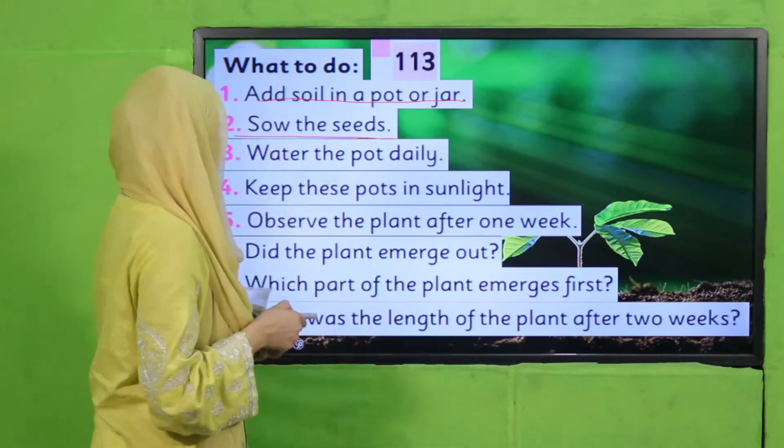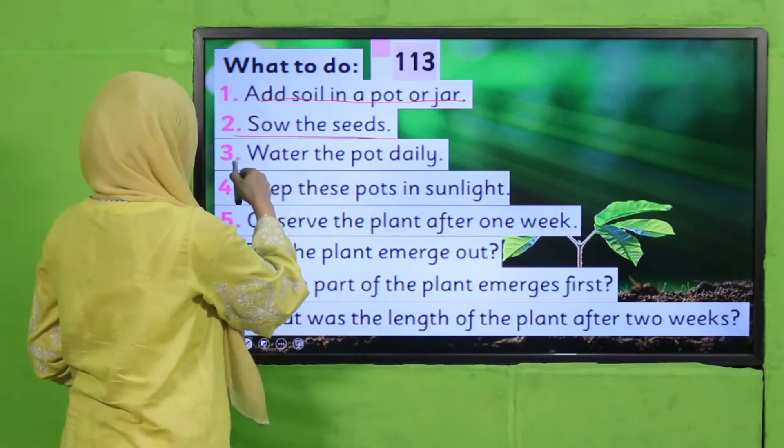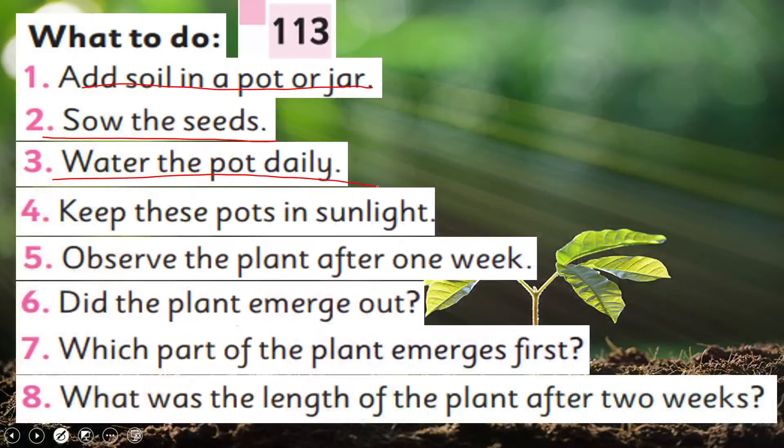Next, water the pot daily. Keep these pots in sunlight. Observe the plant after one week.